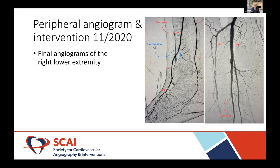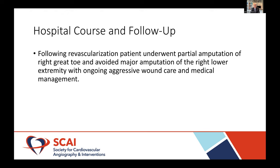The right panel shows the proximal vessels in that anterior tibial artery — just a hypoplastic artery, as opposed to an occlusion, based on these findings. As follow-up after revascularization, the patient did undergo a partial amputation of that necrotic tissue on the right great toe, but with aggressive wound care and medical management, he was able to avoid a major amputation.